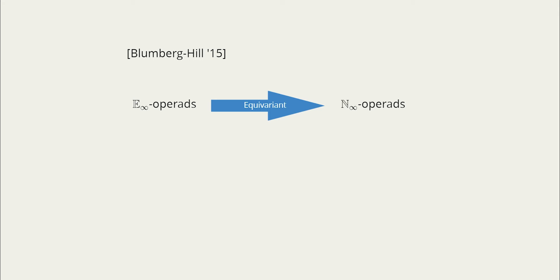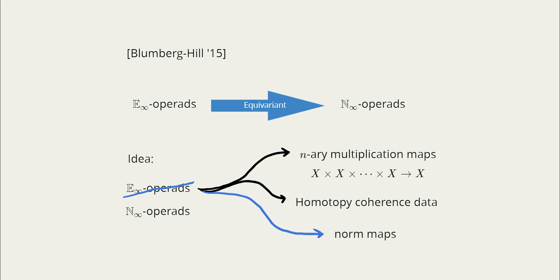N_infinity operads were developed by Blumberg and Hill in around 2015. Essentially they're an equivariant extension of E_infinity operads. To give you an idea of what N_infinity operads involve, let's just first remember what E_infinity operads roughly encode. So the idea is that an E_infinity operad encodes in some way n-ary multiplication maps plus homotopy coherence data between these maps.